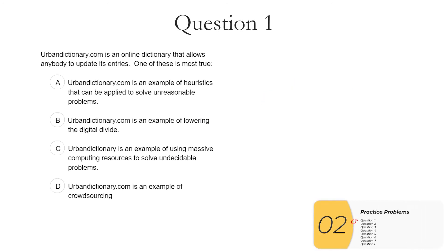Here are your practice questions. One, urbandictionary.com is an online dictionary that allows anybody to update its entries. One of these is most true. So right away, we should see when we're talking about crowdsourcing, we're talking about input or money from many, many, many, many people.